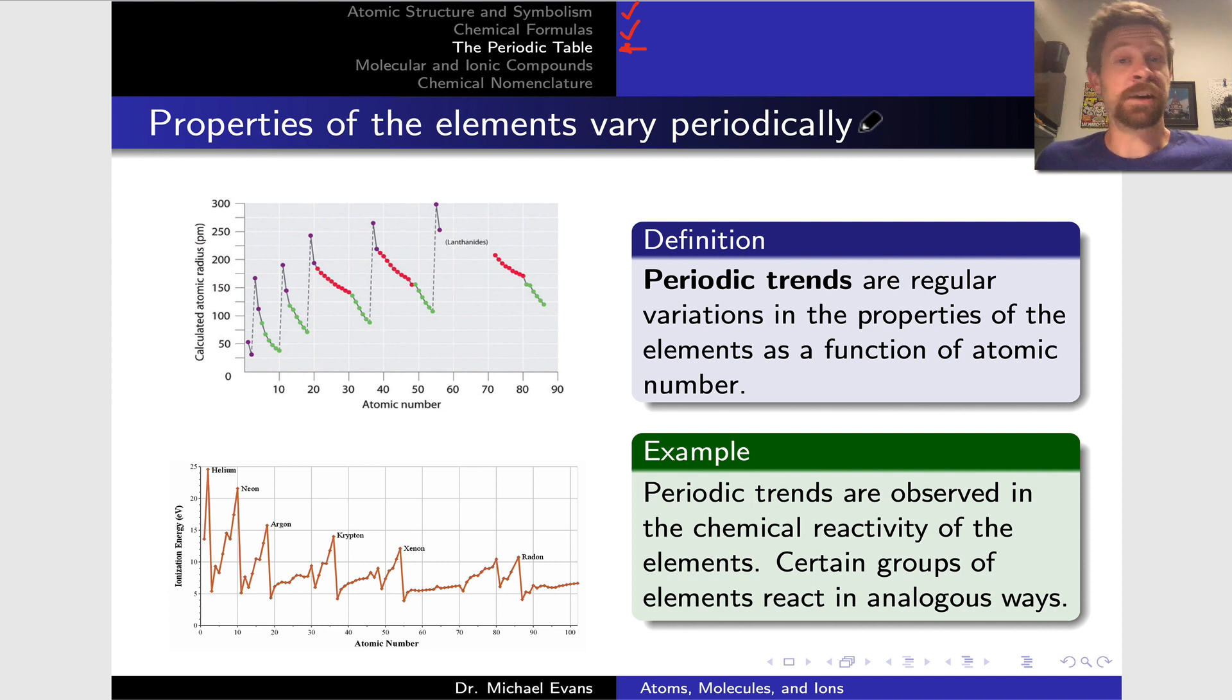The properties of the elements vary periodically, and this was really Mendeleev's great insight when he first formulated the periodic table. When we say the elements' properties vary periodically, what exactly do we mean? Well, I want to give you two examples on this slide of what we mean by the properties of the elements vary periodically.